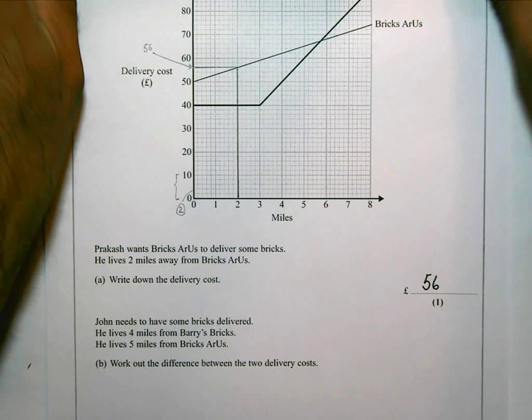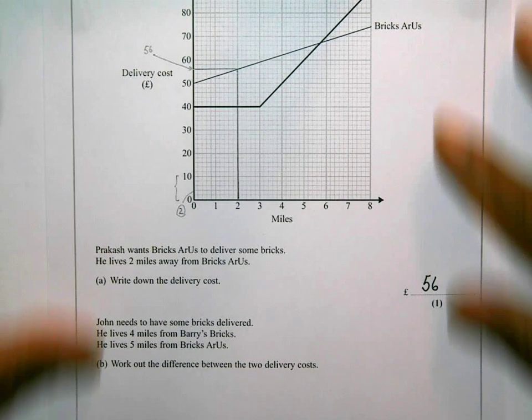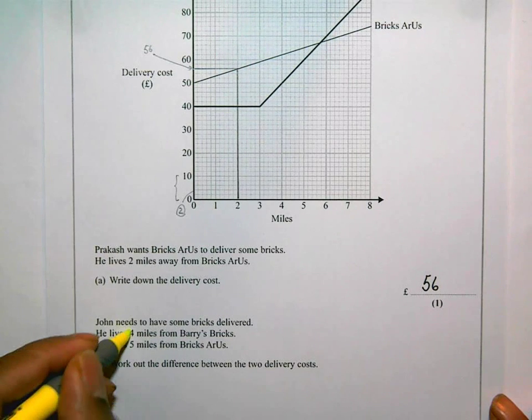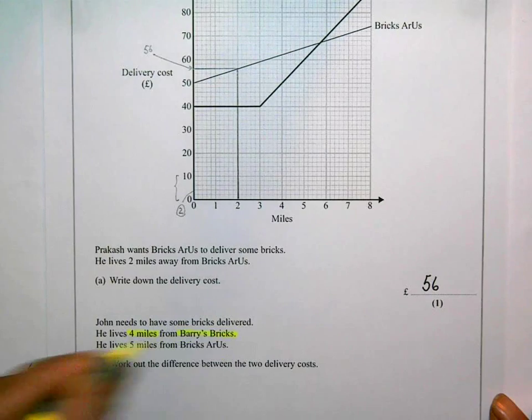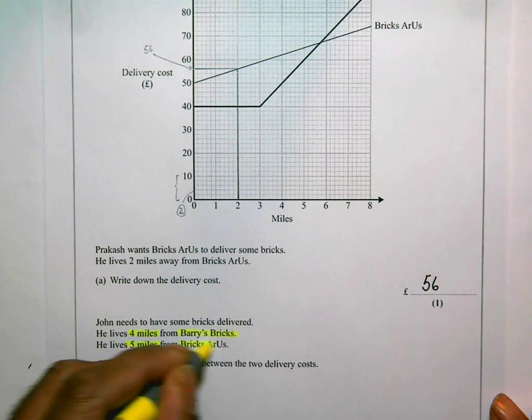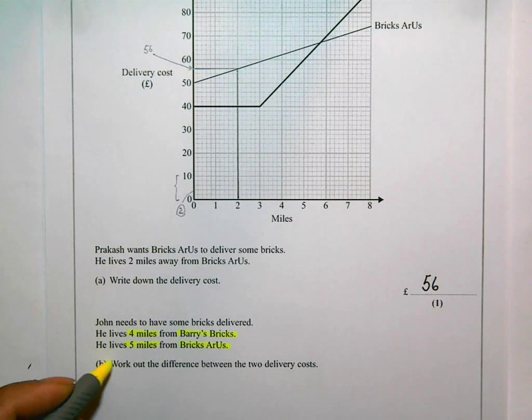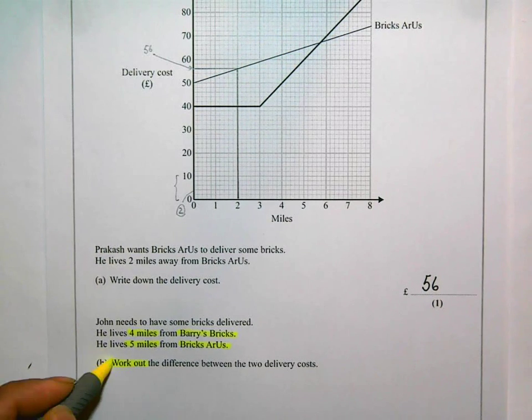John needs to have some bricks delivered. He lives four miles from Barry's Bricks and five miles from Bricks Are Us. So the question wants us to work out the difference between the two delivery costs.